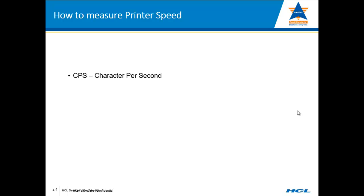Now we can look at the speed of a printer. Customers want to know how fast a printer can give printouts, and we can measure this in three ways: CPS (characters per second), LPM (lines per minute), or pages per minute. Small-end printers like dot matrix printers measure speed in CPS. Higher-end printers like line printers measure speed in LPM or pages per minute.